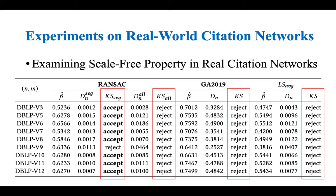After demonstrating the scale-free property in sampled scale-free networks, we conduct experiments on real citation networks to examine the scale-free property in real citation networks. The table shows the overall performance of our RANSAC method and two baselines on nine versions of DBLP citation networks.